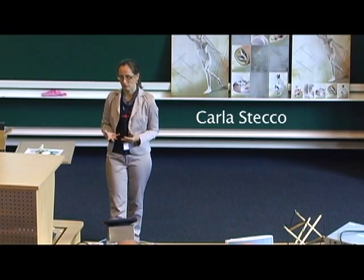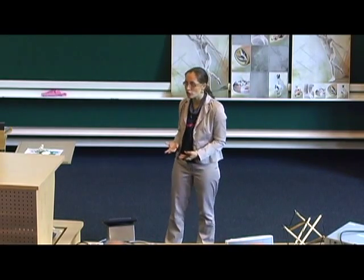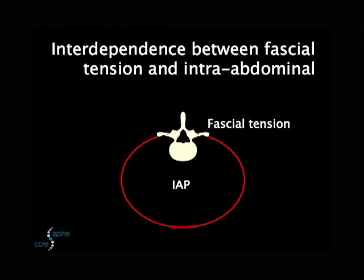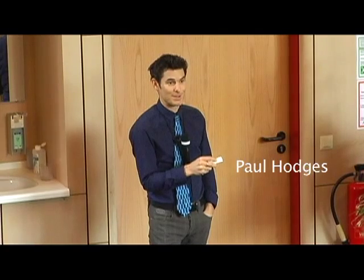I wanted to define the anatomy of the fascia from a dissection and histological point of view. The tension in the structures that have direct attachments to the spine is dependent on the pressure contained within the cavity. Basically, the more of this you've got, the more of this you've got — though I think you can have too much pressure.